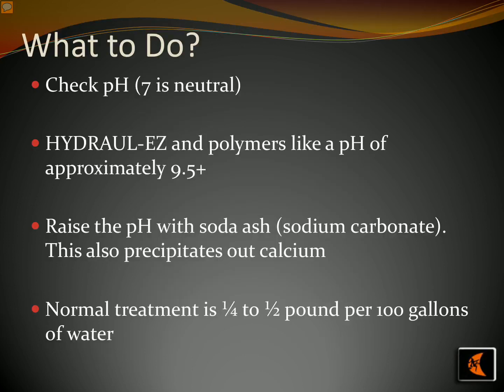In order to achieve a consistent, reliable result using bentonite mining, it is important to pay attention to pH levels. If the pH of the water falls within the range of 7, it is considered neutral. For an optimal result, the pH of water should be raised to approximately 9.5 or higher, using soda ash or sodium carbonate. The general recommendation is to use between one-quarter to one-half pound per 100 gallons of water.